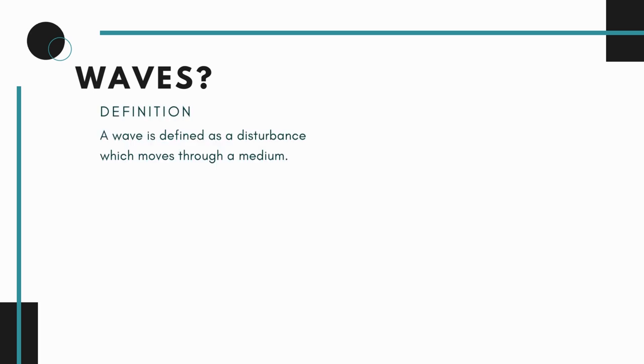What do you understand by waves? A wave is defined as a disturbance which moves through a medium. Disturbance can either be sound, light, or say radio waves. Whereas a medium can be air, water, or even vacuum.